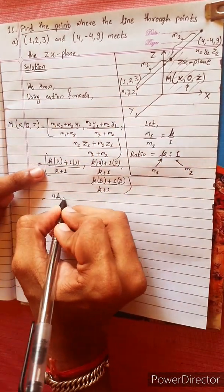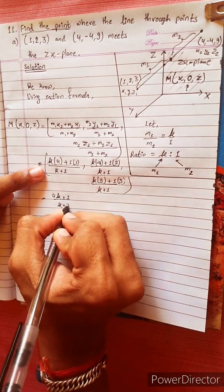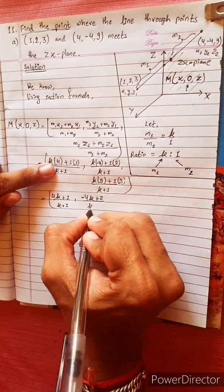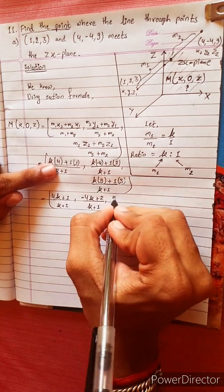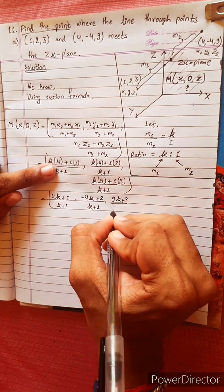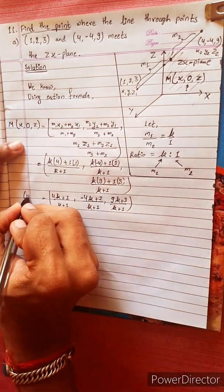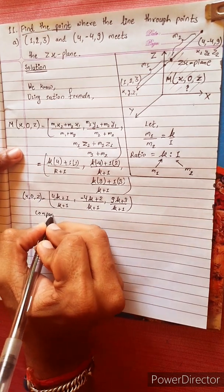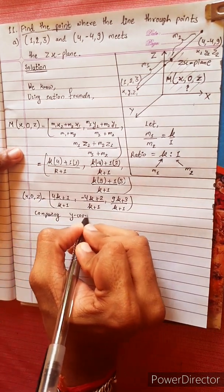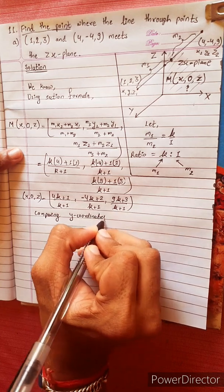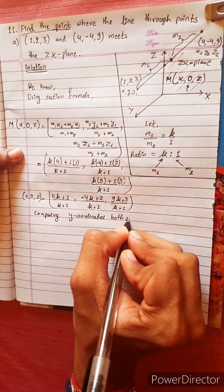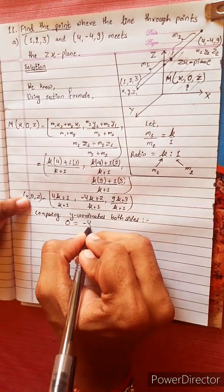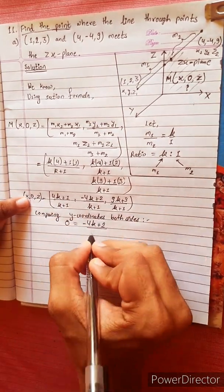The point equals: (4k plus 1) divided by (k plus 1), comma (minus 4k plus 2) divided by (k plus 1), comma (9k plus 3) divided by (k plus 1). Comparing y-coordinates on both sides: the y-coordinate equals zero.